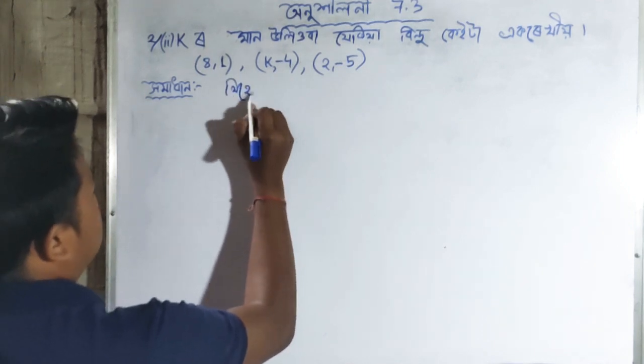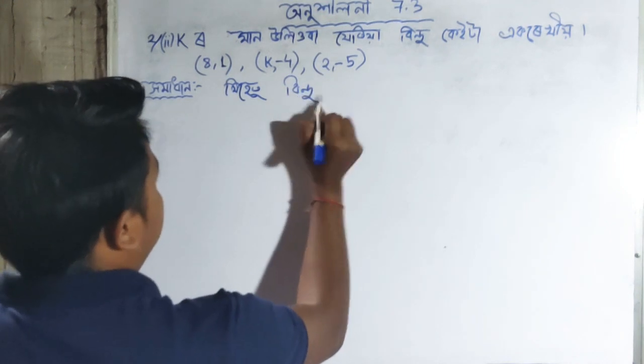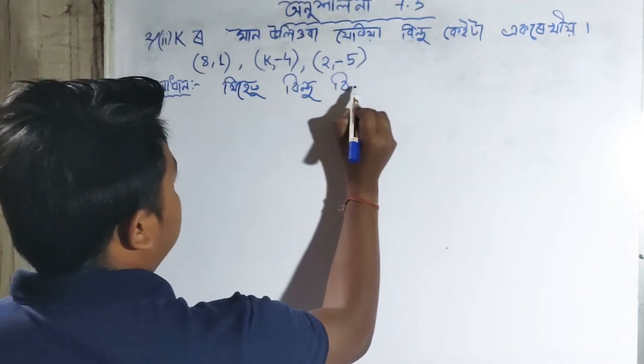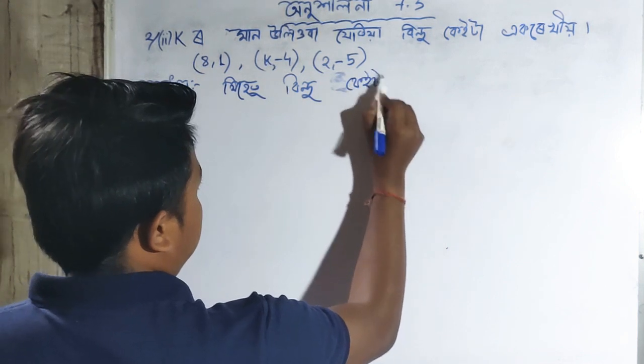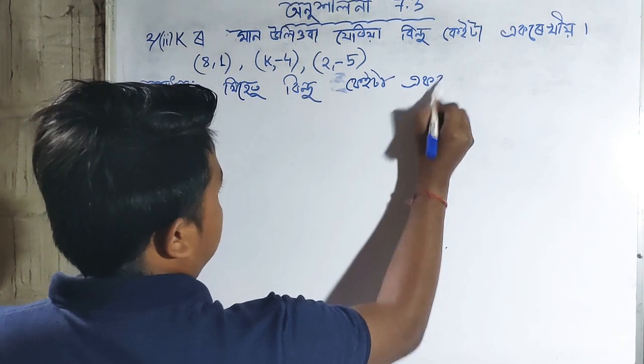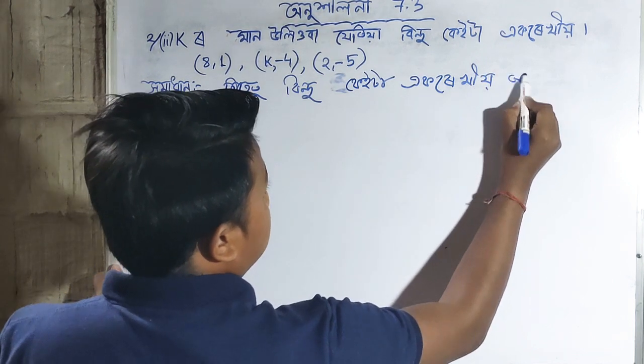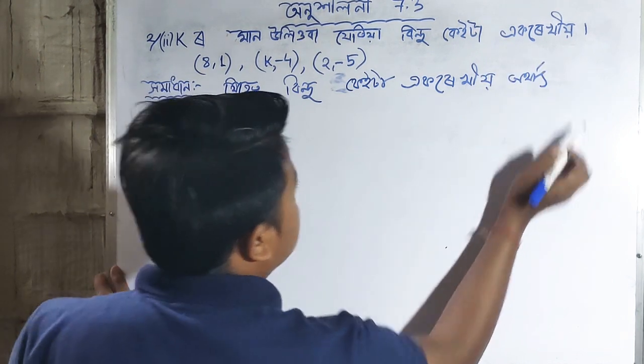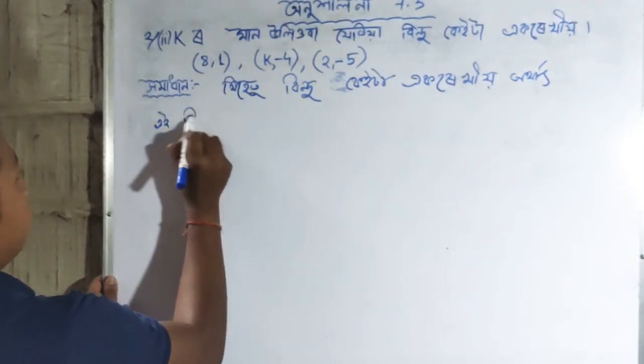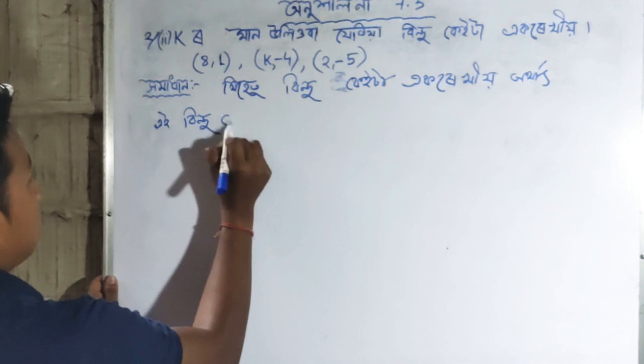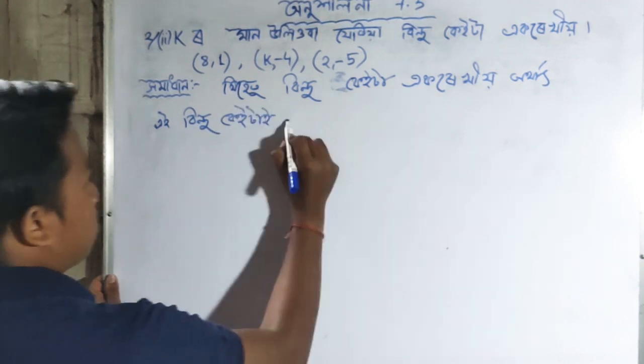To solve this problem, we need to understand what it means for three points to be collinear. When three points are collinear, they lie on the same straight line.